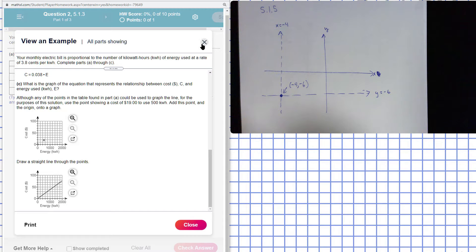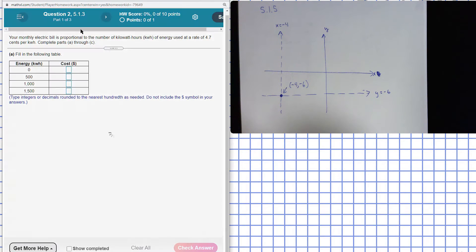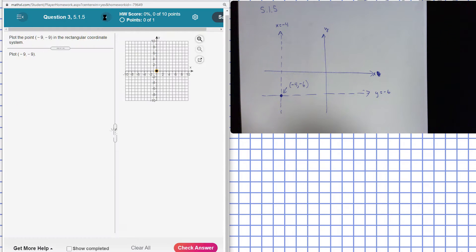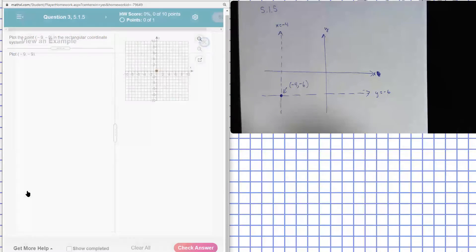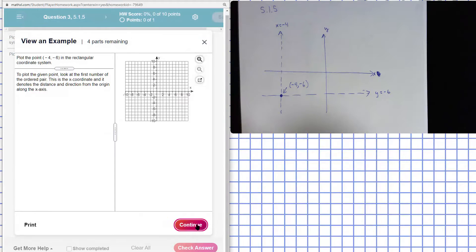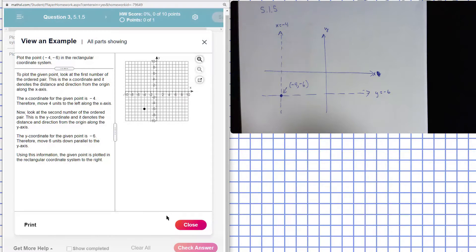In this one here, let's take a look at the next one. Plot the point negative four, negative six in the rectangular system. So you see that it's negative, negative, so being the third quadrant here.